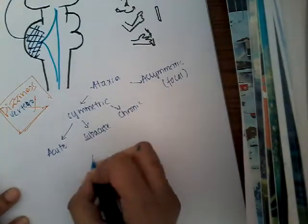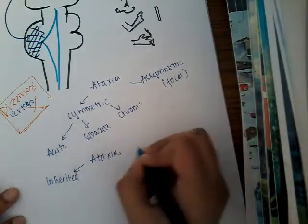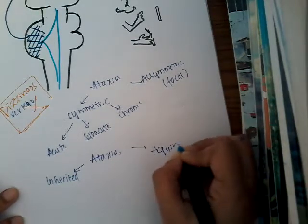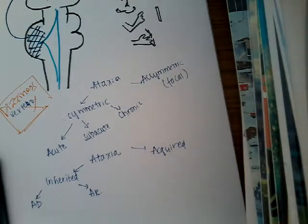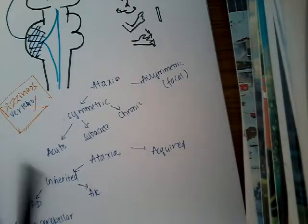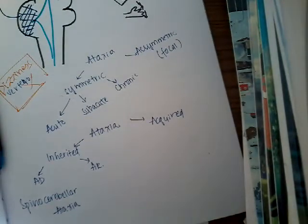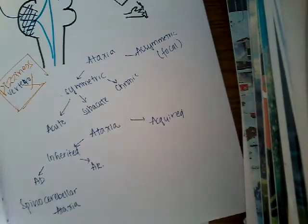This ataxia can be of two types: it can be inherited from parents or it can be acquired. If it is inherited, it can be autosomal dominant or autosomal recessive. The ataxias inherited through autosomal dominant inheritance are called spinocerebellar ataxia. I would like to discuss the pathophysiology of spinocerebellar ataxia so that we understand it better.